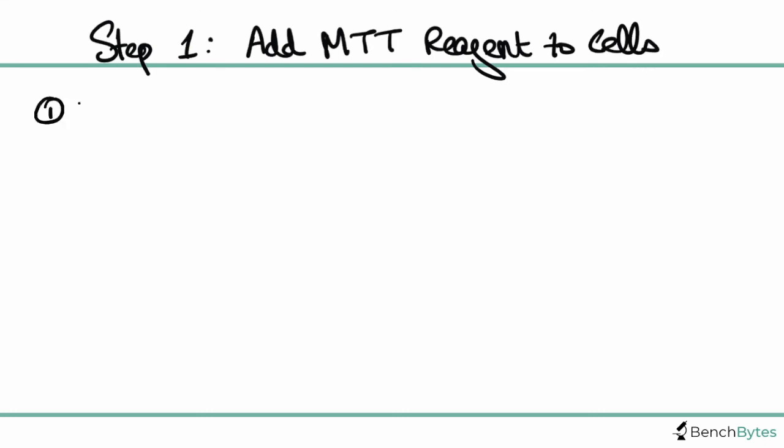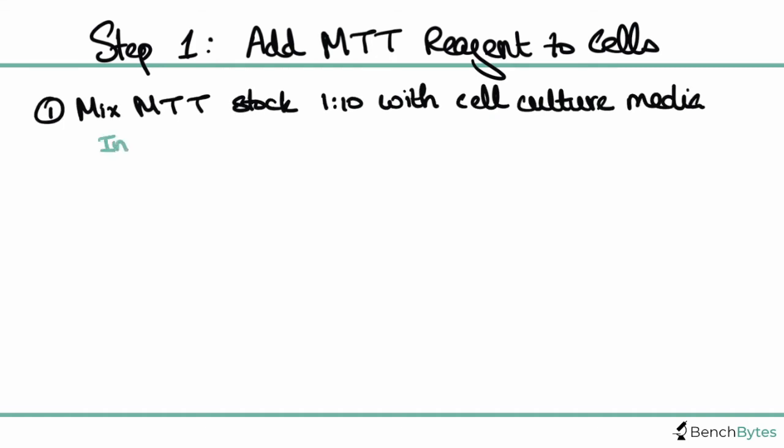For this step, you're going to make a 1 to 10 mixture of the MTT stock solution that you made initially with your tissue culture media. What that practically means is that you're going to mix 1 mL of your MTT stock solution, the yellow solution that we had made earlier, to 10 mL of your tissue culture media.